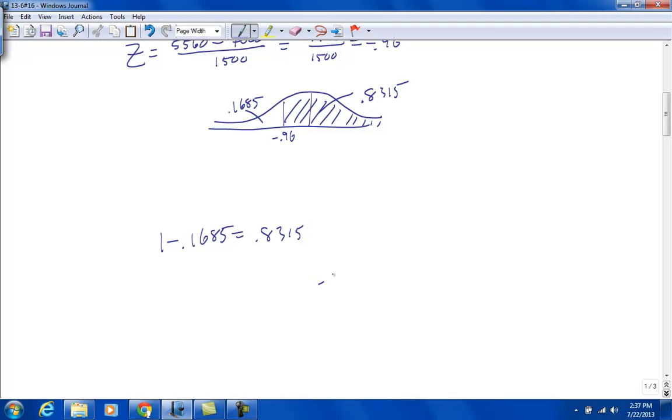So we take 0.8315, multiply it by the 110 families, and we get... Okay, 91.465. We can't have a partial family, so it would be 91 families.